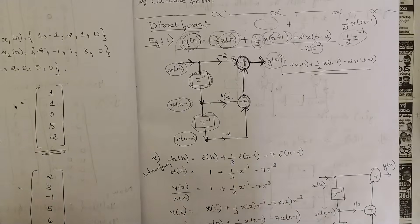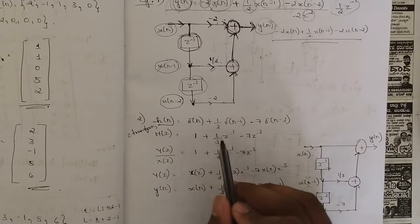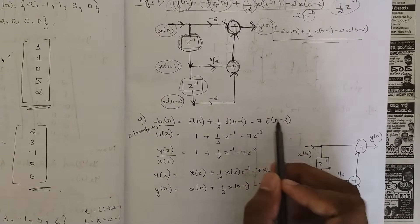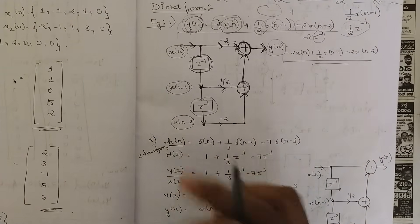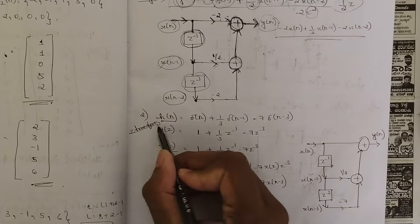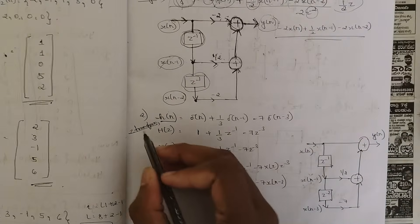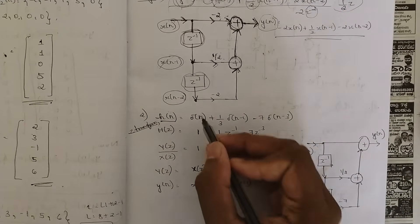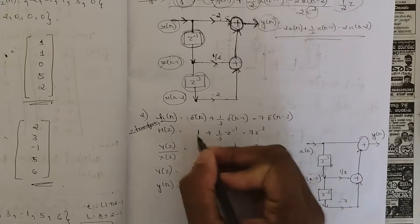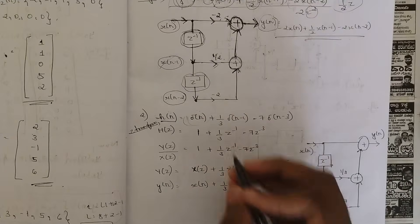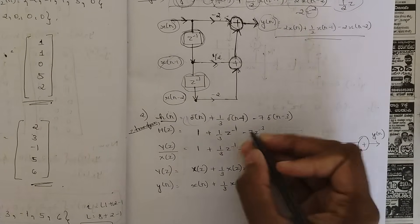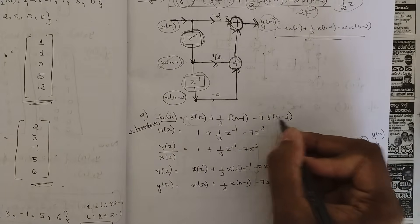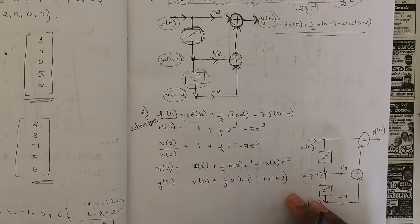Now let us see one more example. Here they have given H(N) instead of Y(N): H(N) = δ(N) + (1/3)·δ(N-1) - 7·δ(N-3). First take the Z-transform. H(Z) = 1 + (1/3)·Z⁻¹ - 7·Z⁻³, since the Z-transform of δ(N) is 1, δ(N-1) gives Z⁻¹, and δ(N-3) gives Z⁻³.